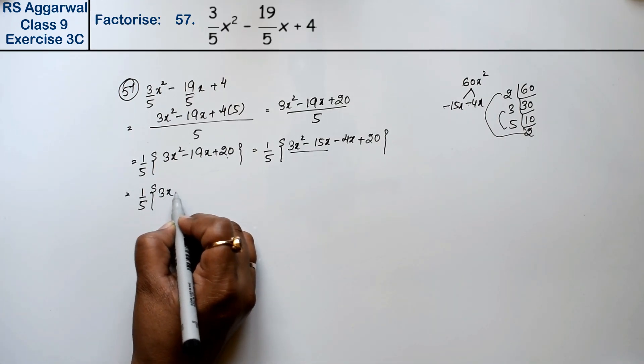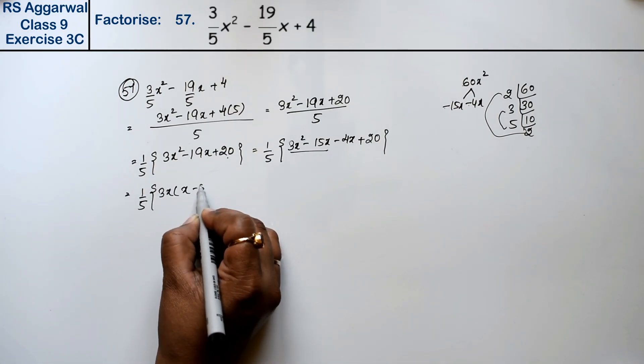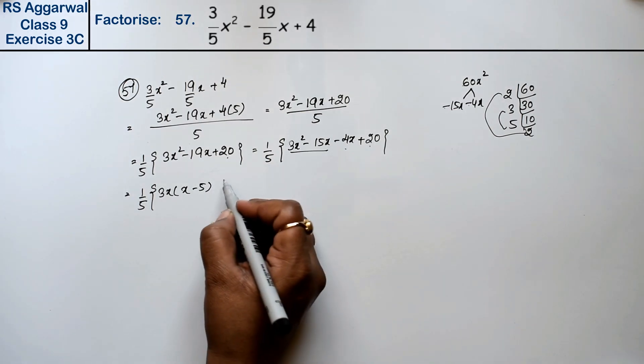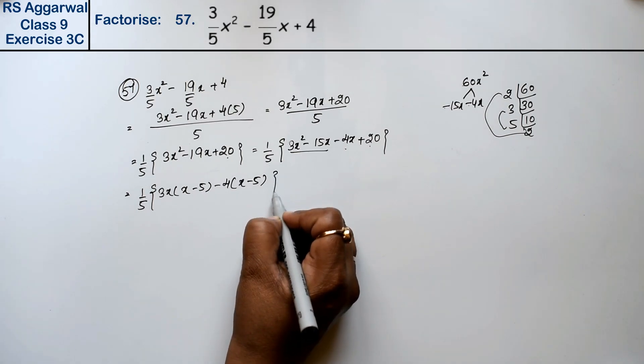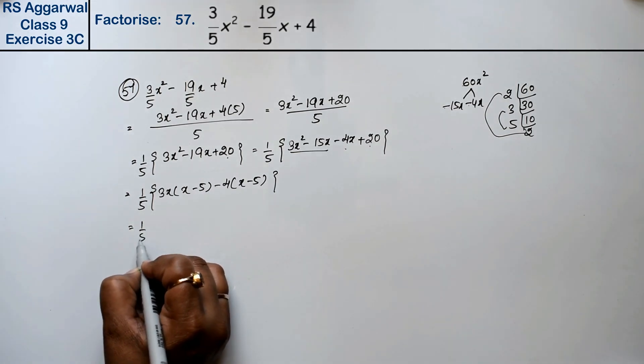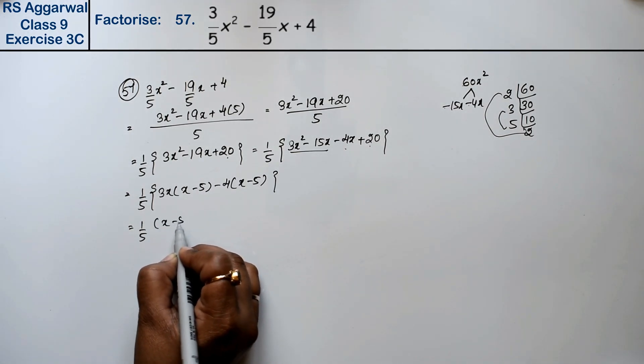So factoring out, we get (x - 5). Taking this common gives us 1/5 (x - 5) as part of the answer.